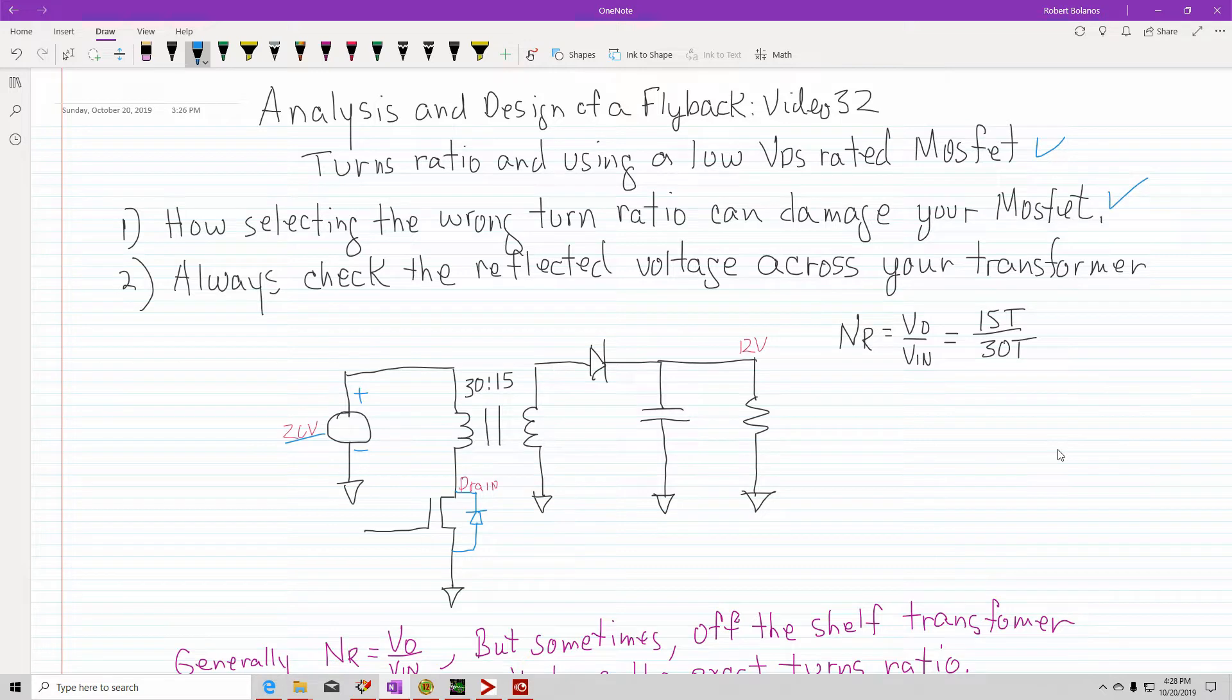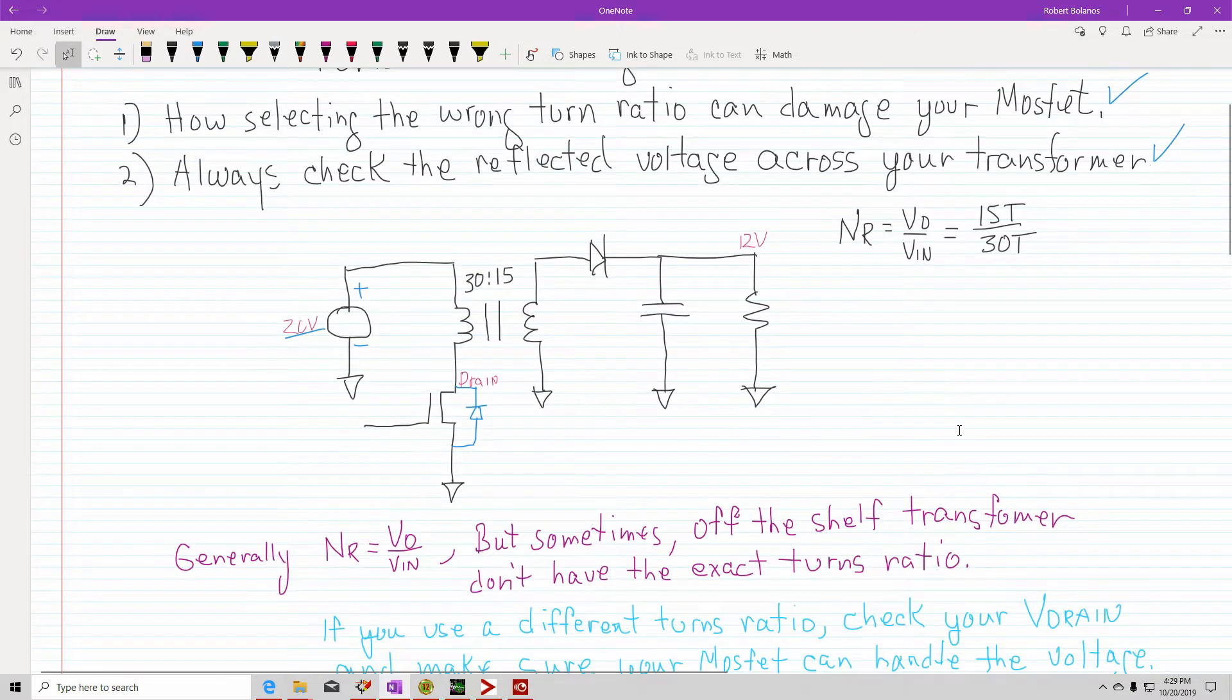So I'm going to show how selecting the wrong turns ratio can damage your MOSFET. I'll show a simulation of that. And if you don't have the right turns ratio because you're not building or winding your own transformer, let's say that you are using a Digi-Key transformer that has a slightly different turns ratio, you need to check what your MOSFET is. So you want to make sure that your MOSFET can handle it.